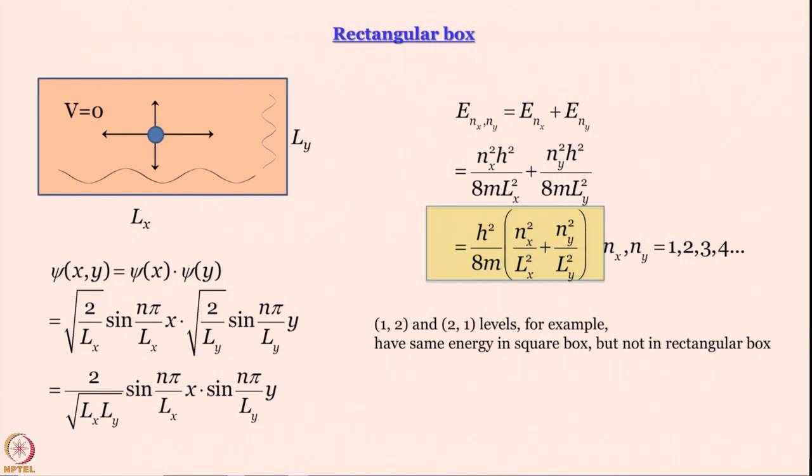Let us say I try to draw the energy levels of a square box. For a square box, what is the lowest energy level? 1,1. What is the next energy level? 1,2. But what is the energy of 2,1? The energy is the same because remember what the expression is: h square by 8mL square multiplied by nx square plus ny square. How does it matter whether I write nx first or ny first? It is the same. So here for a square box, we have degeneracy. Degeneracy means we have energy levels whose energies are the same.